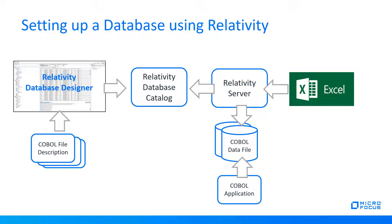We'll use Relativity so that Excel can access the data. Setting up Relativity is straightforward. We start with a designer. An engineer imports COBOL file definitions and specifies how COBOL files, records, and fields should map onto databases, tables, and columns. The designer stores the database definitions in a catalog, which the main Relativity data server can then reference. We can now connect tools such as Excel to an ODBC data source through the Relativity server. Meanwhile, the existing COBOL application continues to function and process the data files.